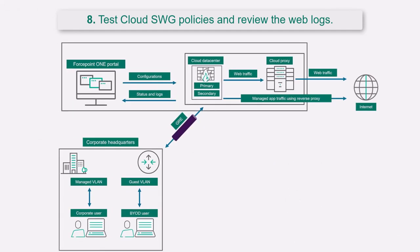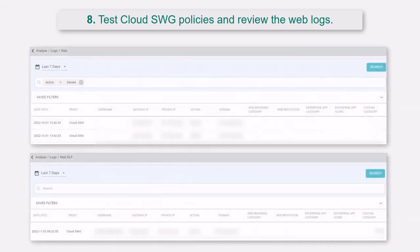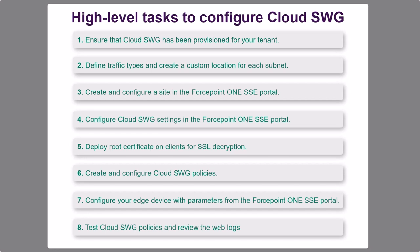Once everything has been configured, your last step is to test traffic filtering and the SWG policies that were configured. Web traffic going through Cloud SWG transparent proxy will display in the web logs and web DLP logs. As a final note, here are the 8 high-level steps for configuring the Cloud SWG transparent proxy.